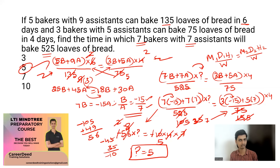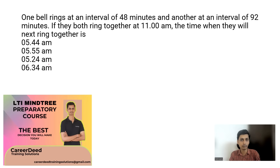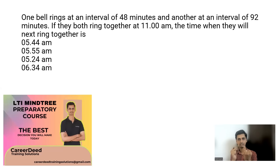Moving to the second question: one bell rings at an interval of 48 minutes and another at an interval of 92 minutes. If they both ring together at 11 AM, what time will they next ring together? The answer lies in the LCM. The first bell rings at multiples of 48, and the second at multiples of 92.